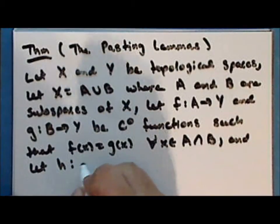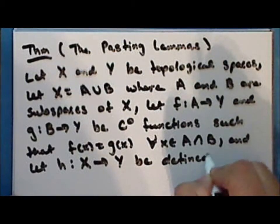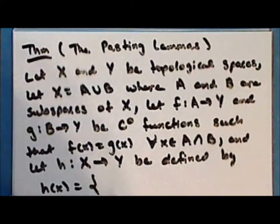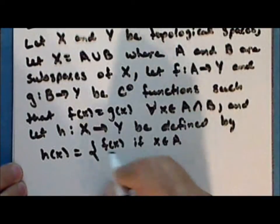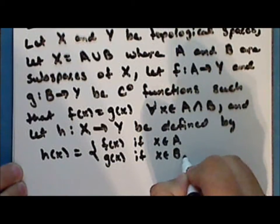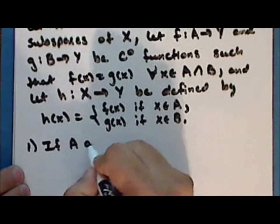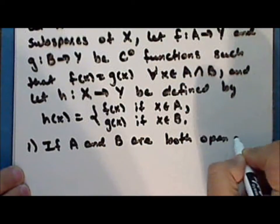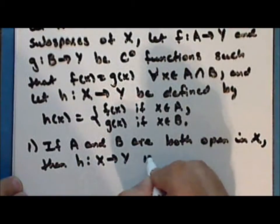Let the function h, which is a map from the entire set x into the space y, be defined by: h of x is f of x if the point x is in the subspace a, and g of x if the point x is in the subspace b. If the subspaces a and b are both open in the space x, then the function h mapping x into y is continuous.